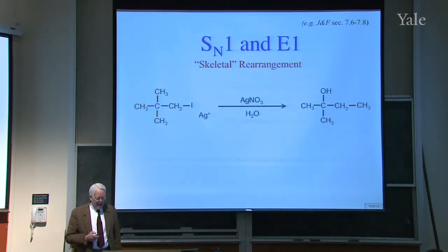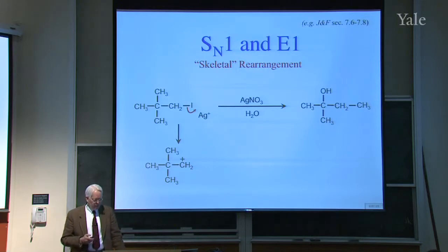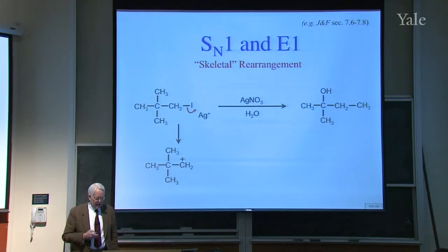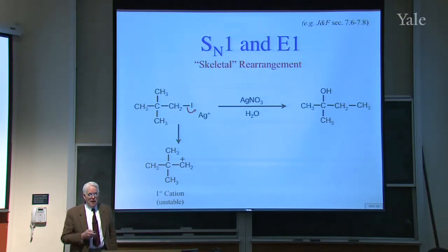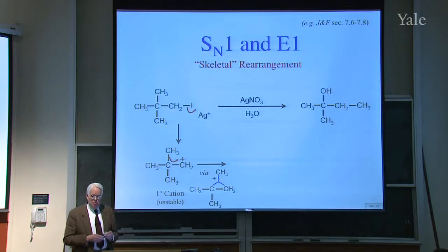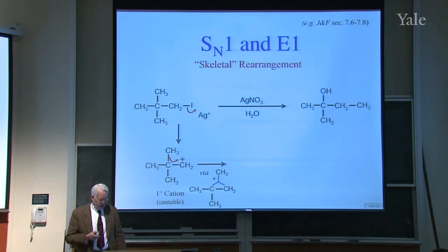Silver comes down and pulls off iodide, which would generate this cation. In the cation we have a low LUMO on the cationic carbon. But there are HOMOs next door, the C-C sigma bonds. Since primary cations are rather unstable, you could get a rearrangement.